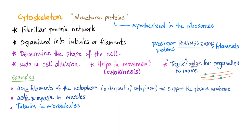So, what is the cytoskeleton? It's a network of fibrillar proteins — they are structural proteins, synthesized by the ribosome, because this is what synthesizes proteins. They are organized into tubules and filaments. The cytoskeleton determines the shape and contour of the cell. It helps in cell division and in movement of the cell, called cytokinesis — 'kineto' means movement, 'cyto' means cell. It provides a track or bridge for organelles to walk on.